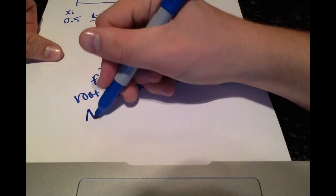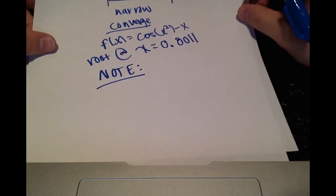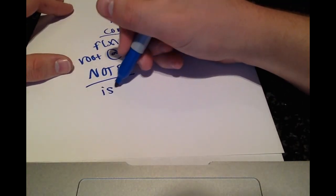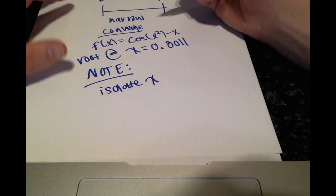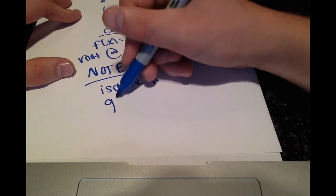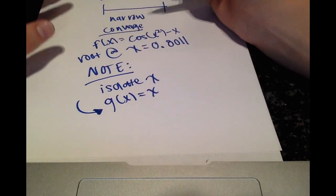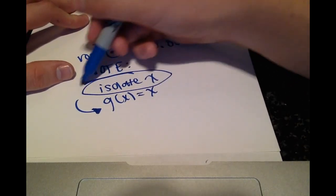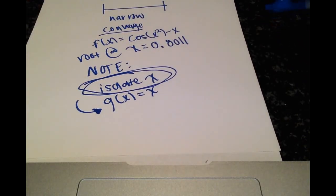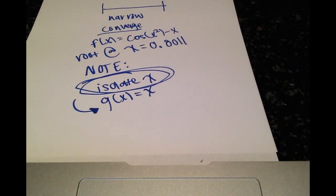And then an important note, for the simple fixed point iteration to work, you have to be able to isolate x. So a key part of this is that when we split up f of x into g of x and h of x, g of x equals x. So to be able to let g of x equal x, you have to be able to isolate x. So just an important note when you're approaching these problems, some may be difficult just in the original function to isolate x, but you have to be able to do that to move forward and do this process.